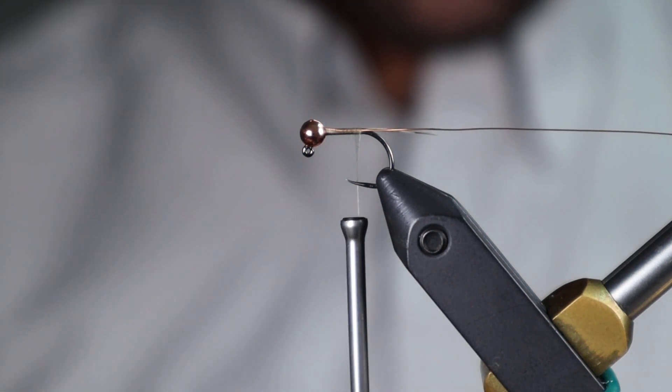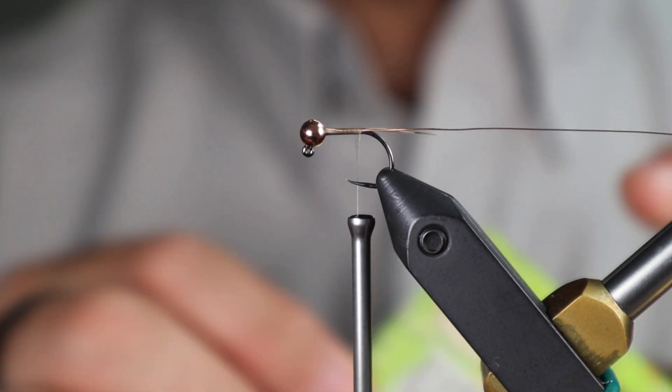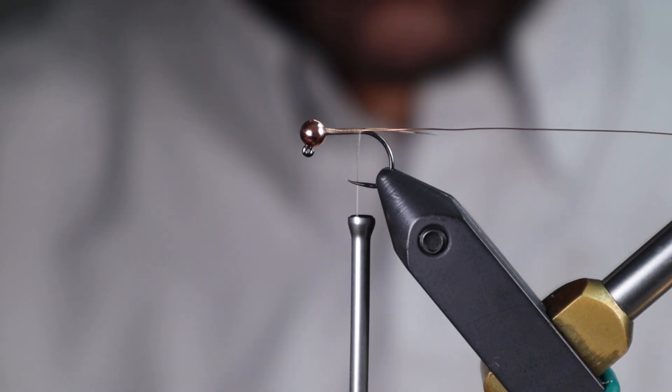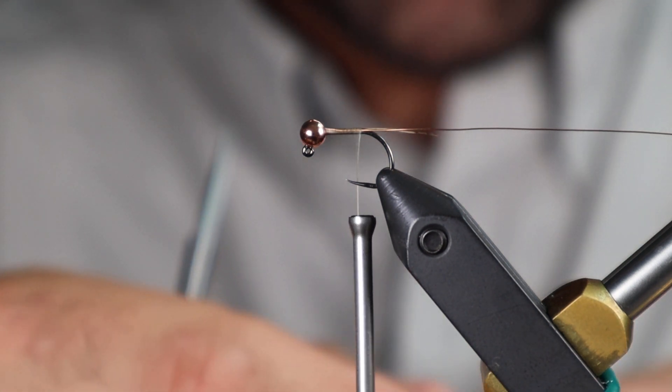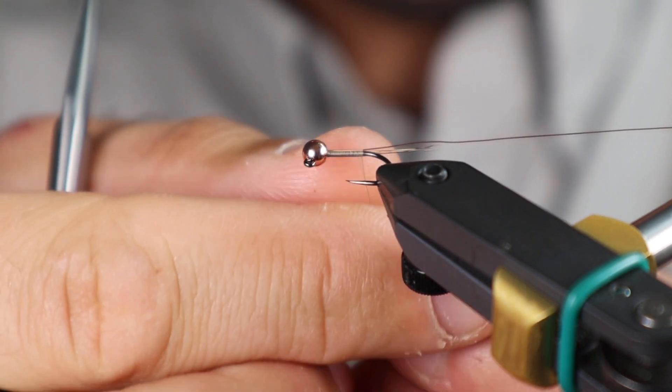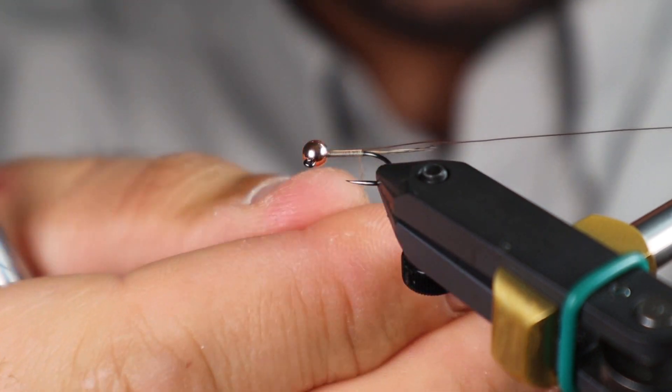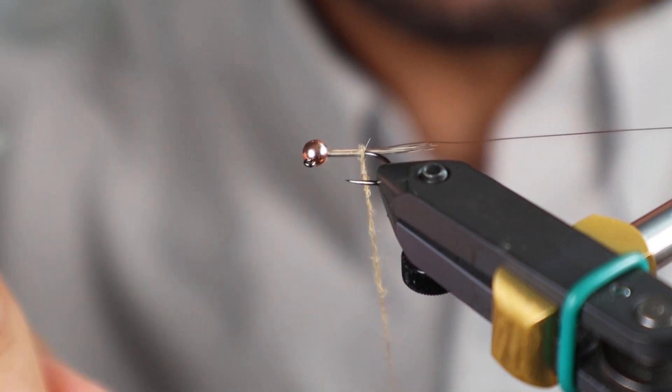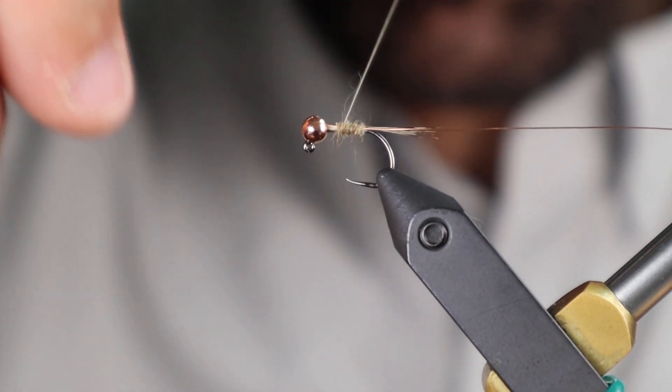Next, dubbing. I'm using Wapsi. This is just natural fur, light hare's mask. Just like any of the flies I tie, I like to go light on the dubbing. You can always add more. It's just hard once you go too thick. Nice and tight, especially at the back. Ideally, I'd like to get a fat carrot shape out of the body, so as I get up towards the top, I can kind of linger a little bit more, make it a little bit fatter, a little bit more.